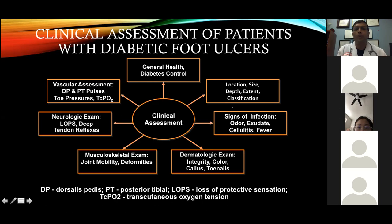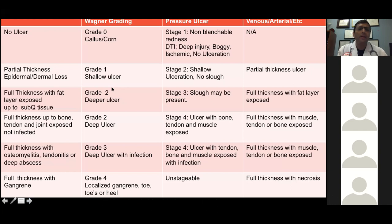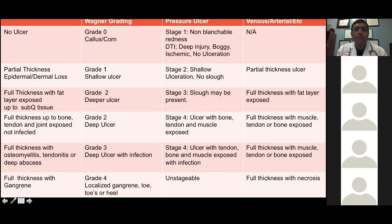If there is an ulcer, assess the grade and size, drainage, and whether infection is present. Grade the ulcer by depth: up to subcutaneous tissue is grade 1; if bone or tendon is exposed, grade 2; if infected with osteomyelitis, tendonitis, or deep abscess, grade 3; and a gangrene like Mr. RG is Wagner grade 4. Don't confuse Wagner grading of a diabetic foot ulcer with pressure ulcer staging — they are not the same.